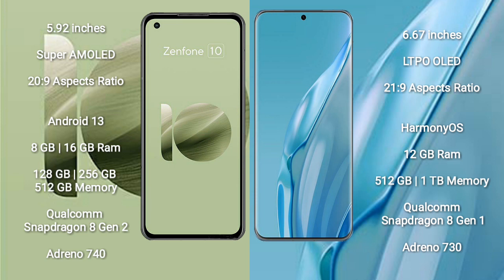The Asus Zenfone 10 runs on Android 13. It comes with 8GB or 16GB RAM and 128GB, 256GB, or 512GB internal storage, powered by the Qualcomm Snapdragon 8 Gen 2 processor with GPU Adreno 740. The Huawei P60 Art runs on EMUI 13.